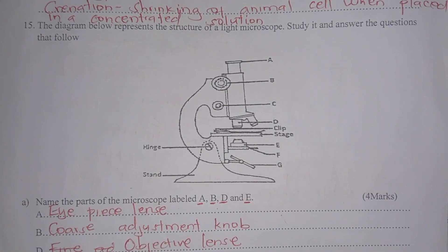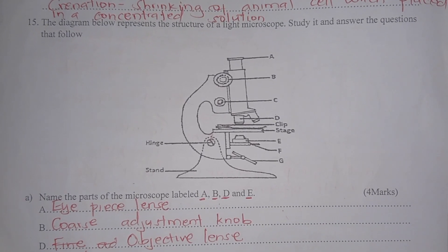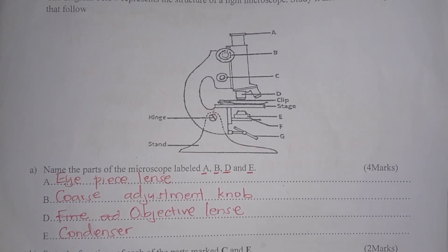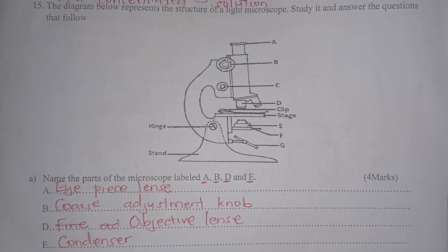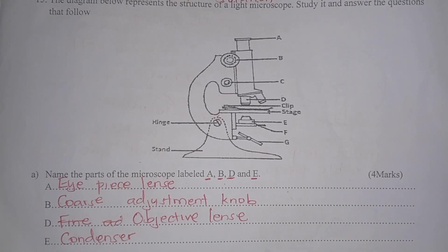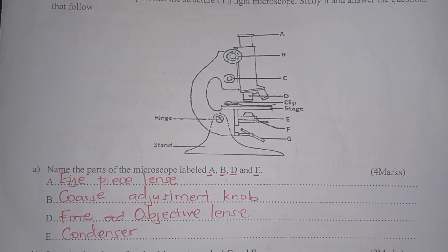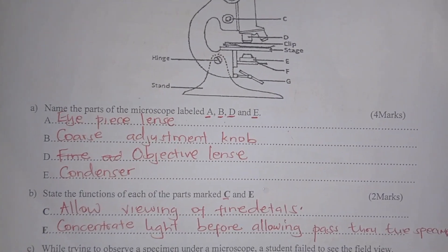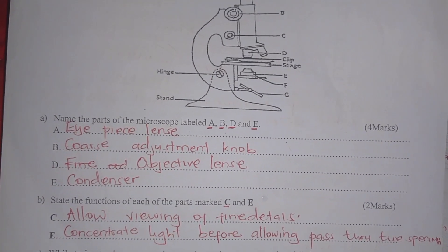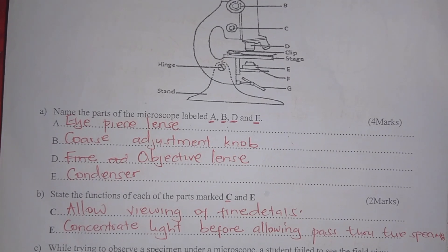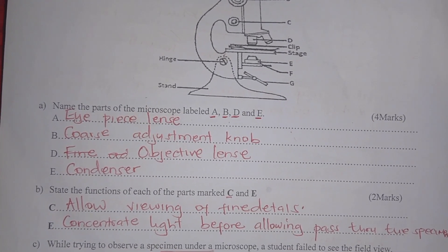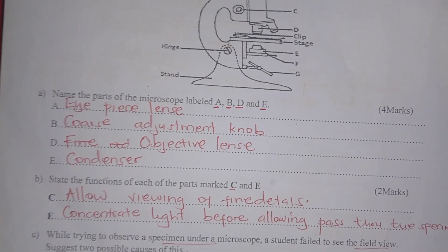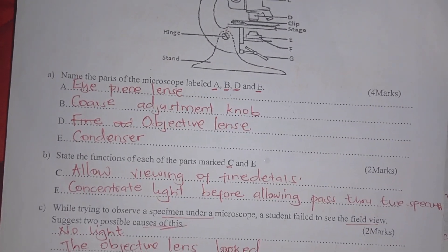The diagram below shows the structure of a light microscope. Name parts A to E: part A is the eyepiece lens, B is the coarse adjustment knob, D is the objective lens, E is the condenser. State the function of parts C and E: part C is the fine adjustment knob used to view fine details, and part E the condenser concentrates light before allowing it to pass through the specimen.